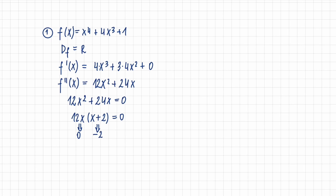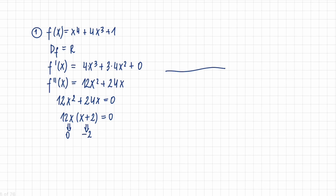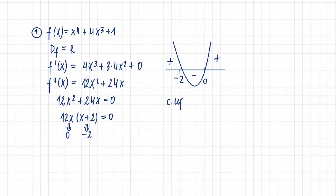Now we can put these points on the graph. We can see that a is equal to 12, which means the graph is directed upwards because 12 is positive. Looking at the graph, the function is concave up on the interval from minus infinity to minus 2 and from 0 to plus infinity, and the function is concave down on the interval from minus 2 to 0.